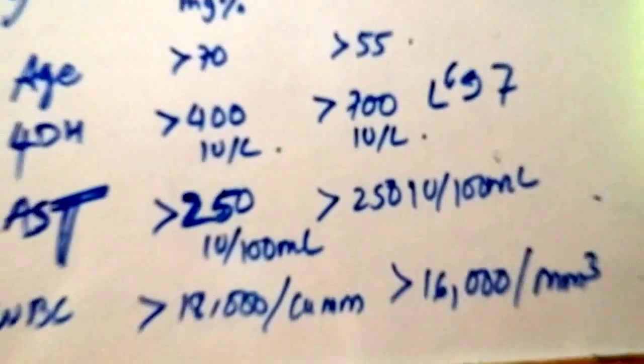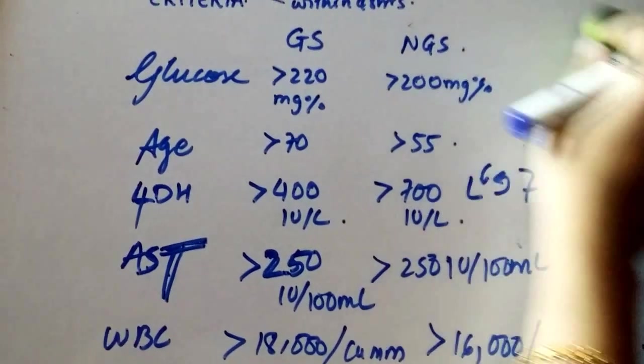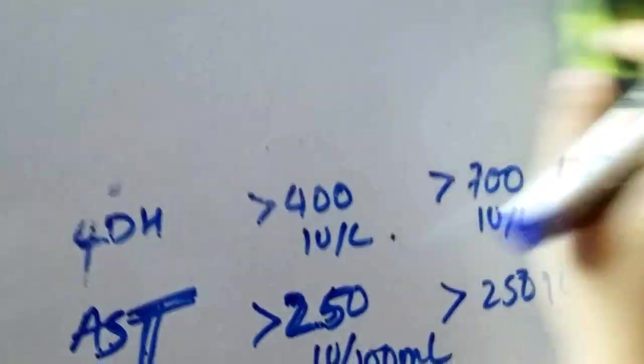So this is what the criteria looks like. Now we're going to talk about what do you assess within 48 hours of admission.